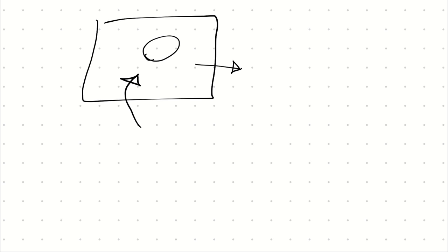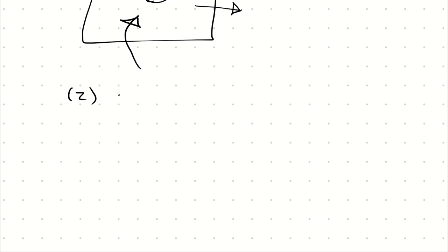The other major modification to our skill set is going to be accounting for the energy of a moving mass, because when we consider energy entering or exiting our control volumes in our open system analysis, we have to account for the fact that energy could enter or exit as heat transfer, work, and mass. So when we talk about our energy balance, we have to consider the energy associated with any mass crossing the boundary as well.